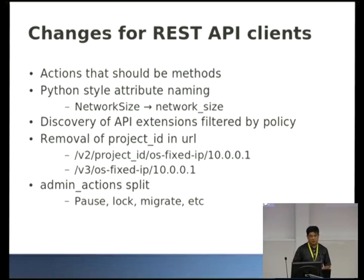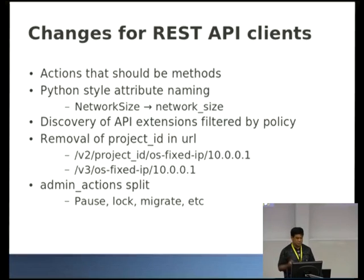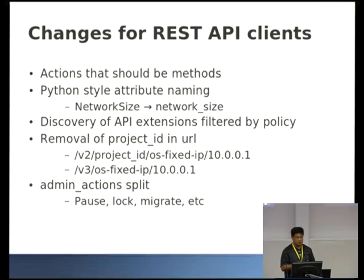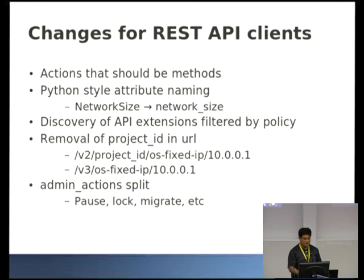There are a few other cases where actions and REST should have been methods. They've been fixed using snake case consistently through the API rather than a mix of the two. You can now filter what extensions are visible to clients through policy. We've removed the project ID from the URLs specified to Nova because it's in the auth token passed to Nova anyway — so it's redundant. Admin actions has been split — it held miscellaneous admin functions like pause and lock, and to make it easier for deployments to only enable a subset, we're splitting it into different extensions.